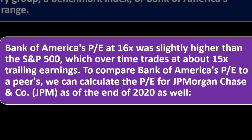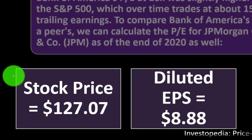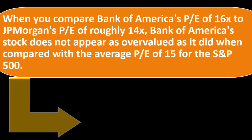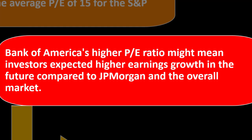Bank of America's P/E at 16x was slightly higher than the S&P 500, which over time trades at about 15x trailing earnings. To compare with a peer, we can calculate the P/E for JPMorgan Chase (JPM) as of end of 2020: stock price $127.07, diluted EPS of $8.88, giving a P/E of approximately 14.31x. When comparing Bank of America's P/E of 16x to JPMorgan's 14x, Bank of America's stock does not appear as overvalued as it did when compared to the S&P 500 average of 15x.